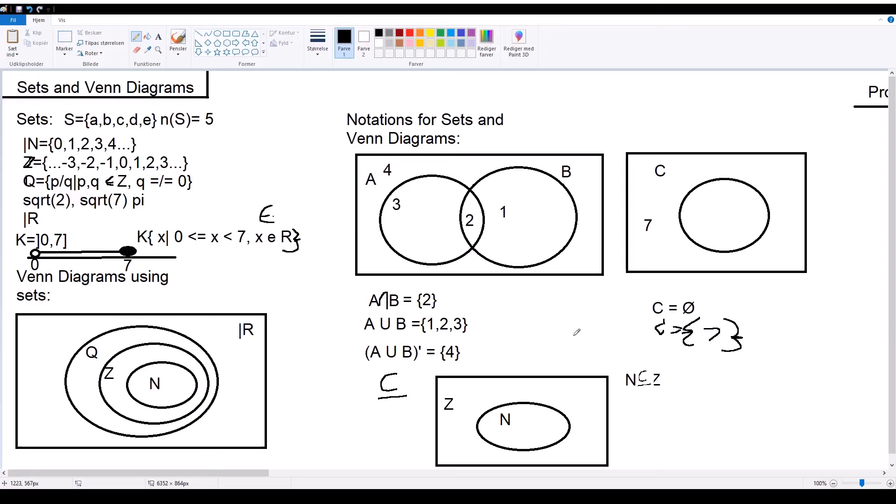And the way you show that a set is a subset of another set is using this symbol, the C with a line under it. In this case, I've shown that natural numbers are a subset of integers, so you would show it something like this, where N is a subset of integers.